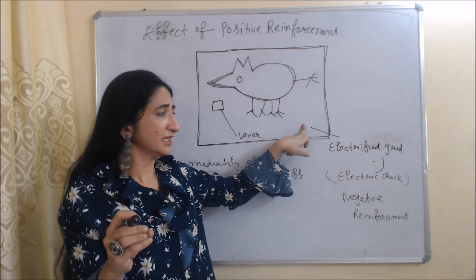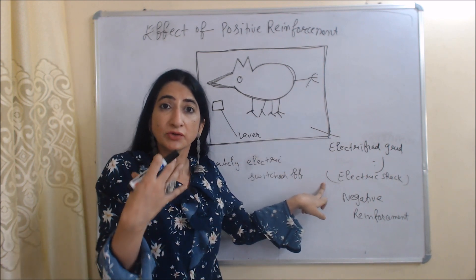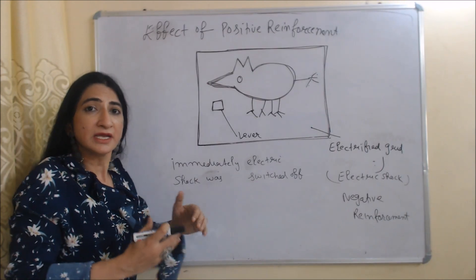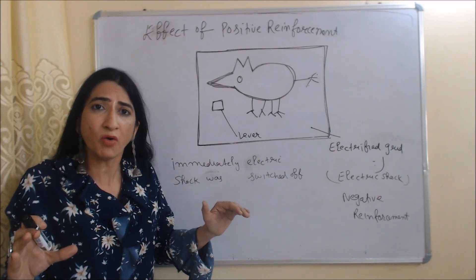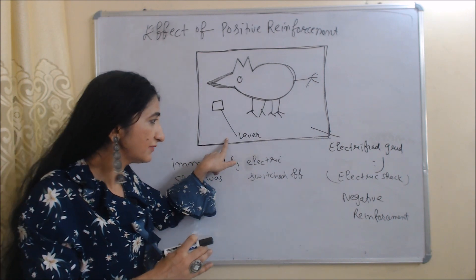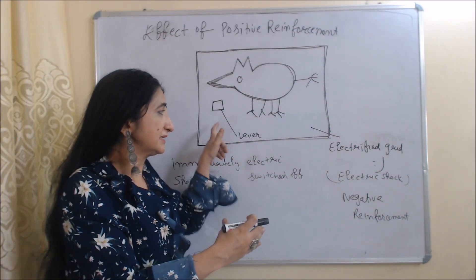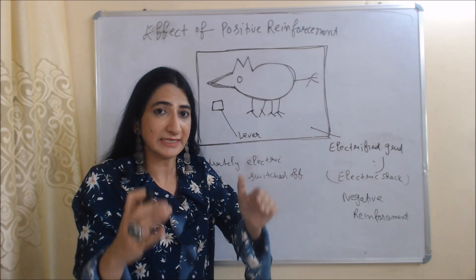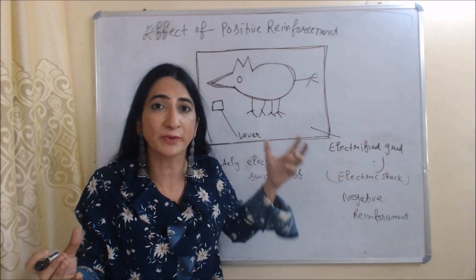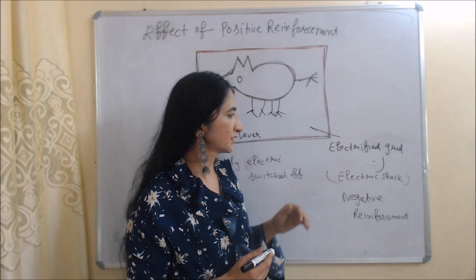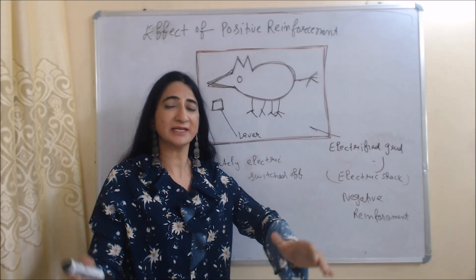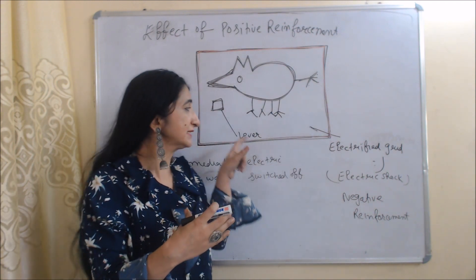On this side of the box there was also an electrified grid. When the rat came there he got a small electric shock, and while running inside the box he accidentally pressed the lever and the electric shock switched off immediately. After repeating this process many times, the rat realized there is a connection between the lever and the electric shock. Whenever he pressed the lever the electric shock switched off, so he learned to press the lever to protect himself from the shock. Here the electric shock is the negative reinforcement — to protect himself from it, the rat was repeating a particular behavior, pressing the lever again and again.